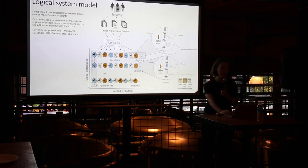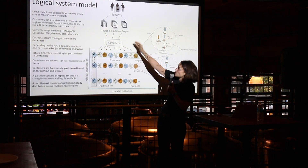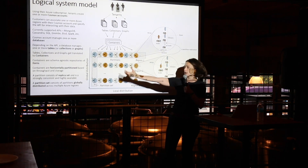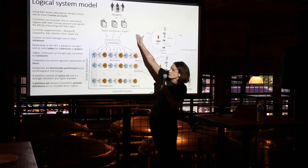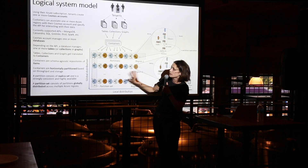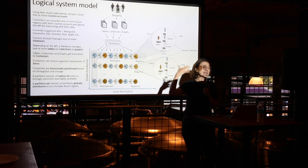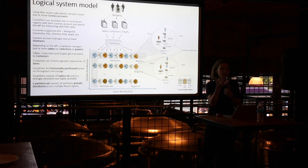Customers can associate one or more Azure regions with their Cosmos account, and then we perform the global replication across multiple regions. The currently supported APIs are MongoDB, Cassandra, SQL, Gremlin, and all of these capabilities are applicable to all of them. The containers themselves are completely schema-agnostic. Whatever data you throw at Cosmos, it will happily absorb it and automatically index all of the entities stored.